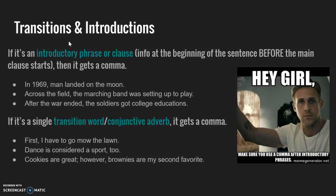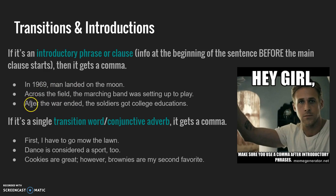Transitions and different types of introductions also get commas. If you start a sentence with an introductory phrase or introductory clause — like a dependent clause — it gets a comma. Examples: In 1969, man landed on the moon. Across the field, the marching band was setting up to play. After the war ended, the soldiers got college educations. The first two are introductory phrases since they lack a verb. After the war ended is a dependent clause because after is a subordinating conjunction, and war/ended give us a subject and predicate — so it's still an introductory element that gets a comma.